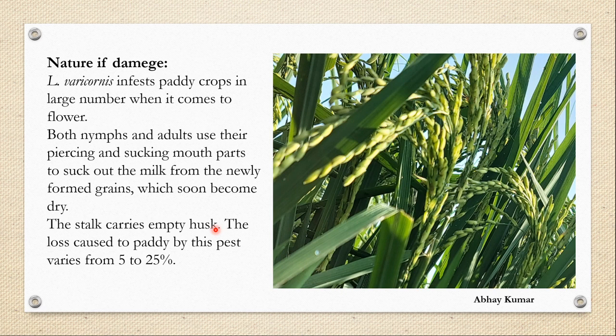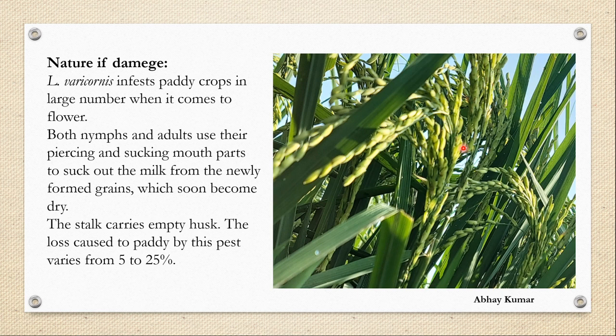Leptocoryza variconis infests paddy crops in large numbers when the crop comes to flower. As they are gregarious feeders, they attack and feed in groups. Both nymphs and adults use their piercing and sucking mouthparts to suck out the milk from newly formed grains. When Leptocoryza variconis sucks out the juice from the green grains, those grains become dry and only the husk is left around the stalks of rice — the husks are empty. The loss caused to paddy by this pest varies from 5 to 25%.